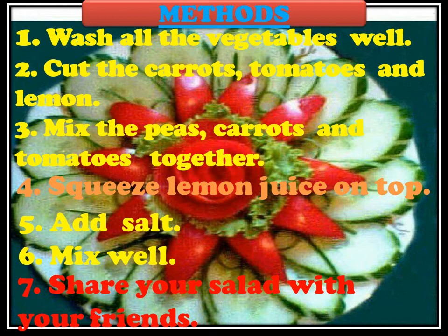Methods — how to make or prepare friendship salad. First step: wash all the vegetables well. Second step: cut the carrots, tomatoes, and lemon. Third step: mix the peas, carrots, and tomatoes together. Fourth: squeeze lemon juice on top. Fifth: add salt. Sixth: mix it well. And seventh: share your salad with your friends. So dear children, you can make it and prepare it at your home, but remember — as you have to use a knife and other cutting utensils, you have to prepare it under the guidance of your parents; your mother or father must be present with you.